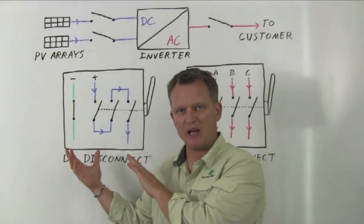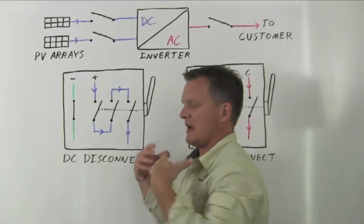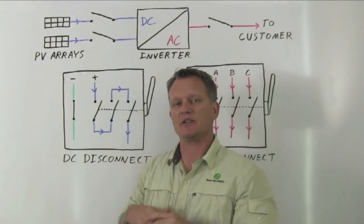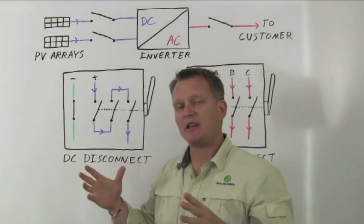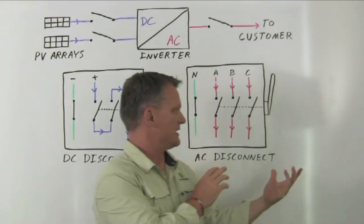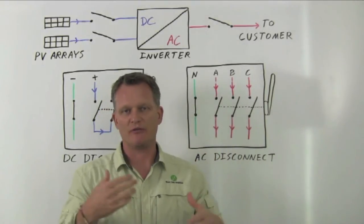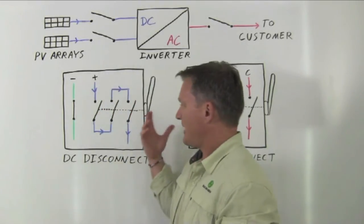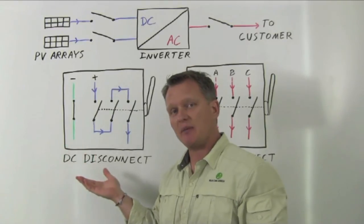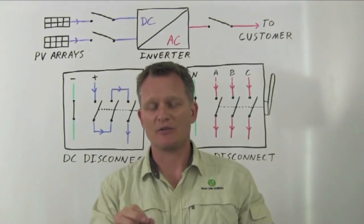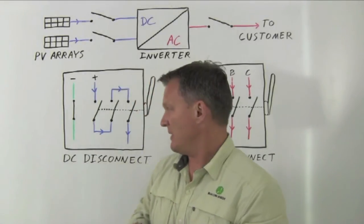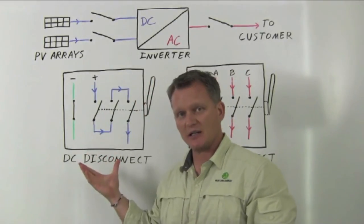So the key here, though: every manufacturer makes a version of an AC disconnect that comes in multiple poles of different numbers, and some of them can be used in DC applications. The lesson to take away from this is that you need to read the manufacturer's installation instructions. Make sure if you want to use their disconnect in a DC application.